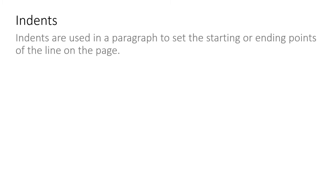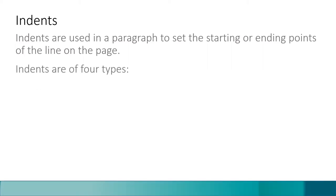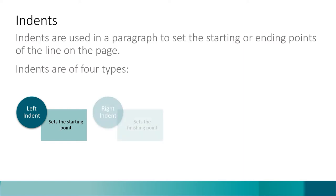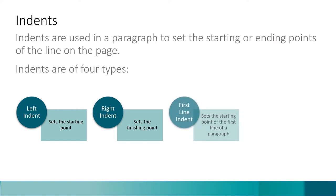The third topic of the chapter is indents. Indents are used in a paragraph to set the starting or ending points of lines on the page. Indents are of four types: left indent, which sets the starting point of a paragraph; right indent, which sets the finishing point of a paragraph; and first line indent, which sets the starting point of the first line of a paragraph.